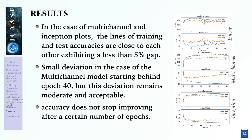To diagnose models against overfitting, we plot accuracy and loss curves for the three models. On the x-axis are epochs, and on the y-axis the accuracy or the loss. In the case of the multi-channel and inception plots, the lines of training and testing accuracies are close to each other, exhibiting a gap of less than 5%. Even though there is a small deviation in the case of the multi-channel model starting after epoch 40, this deviation remains moderate. We also notice that accuracy does not stop improving after a certain number of epochs or begin to decrease. This small gap is a clear indication of non-overfitting.